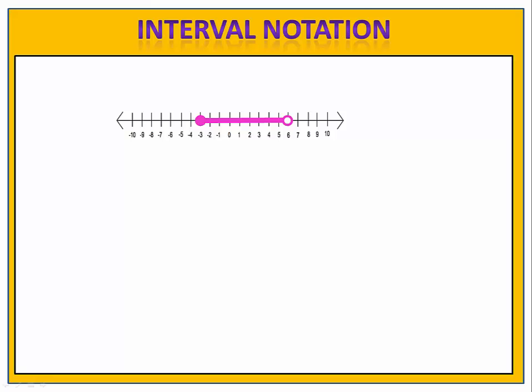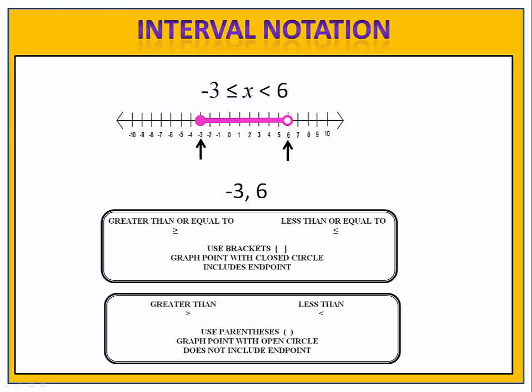Consider this example. We're looking at the set of numbers from negative 3 to positive 6, including negative 3 and not including 6. We could write this using an inequality, but we could also write this using interval notation. With interval notation, we look at the endpoints — negative 3 and positive 6. Those are the two numbers we'll write down, showing where the interval begins and ends. Now we have to decide whether to put a parenthesis or a bracket for each end.